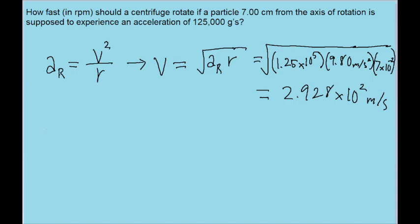Now from there, we want to figure out, we want to take this speed and convert it into an angular speed. We're going to convert it from meters per second to revolutions per minute. So we can do this using a typical chain link conversion. So I'm going to rewrite out the speed that we found: 2.928 times 10 to the power of 2 meters per second.